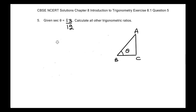This is CBSE and CRT Solutions, Chapter 8: Introduction to Trigonometry, Exercise 8.1, Question Number 5. The question given to us is: secant of theta is equal to 13 divided by 12. Calculate all other trigonometric ratios.